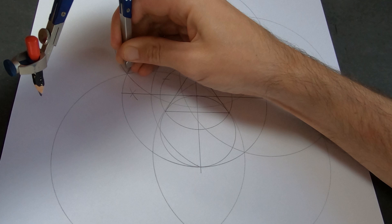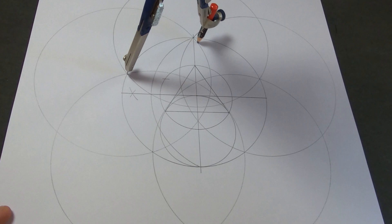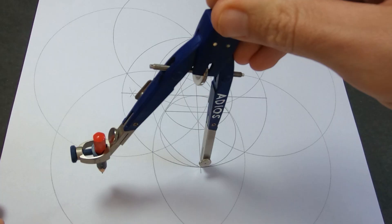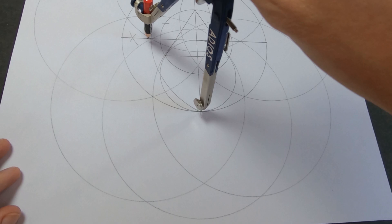So our next set of 5 is going to be right opposite. Go straight down to the bottom intersection and do the exact same thing but from the bottom. Just draw one circle and then work your way around at every point where the circles cross.